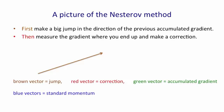We then measure the gradient and go downhill in the direction of the gradient, like that. We then combine that little correction step with the big jump we made to get our new accumulated gradient.